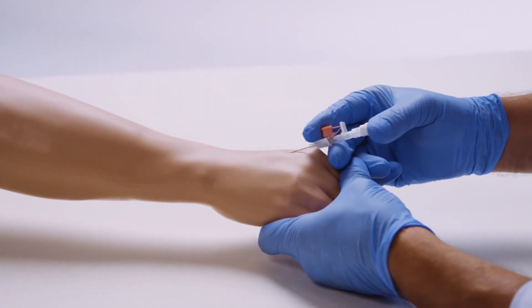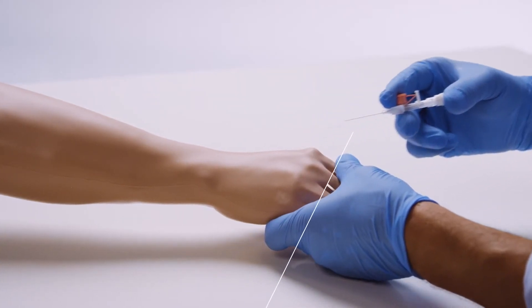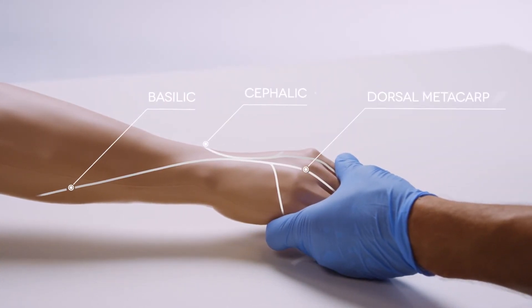For practice in IV cannulation and infusion, a needle can be inserted into the dorsal metacarpal veins of the hand, or the basilic or cephalic veins.